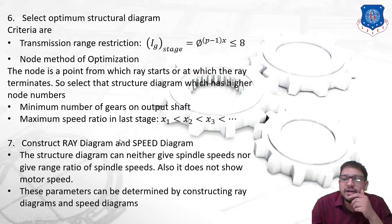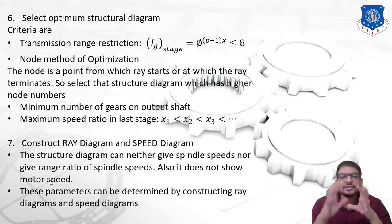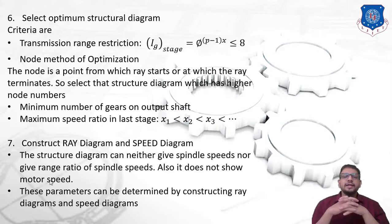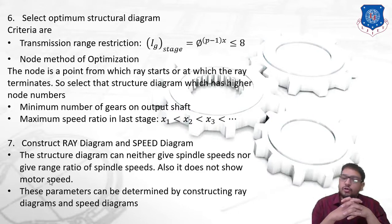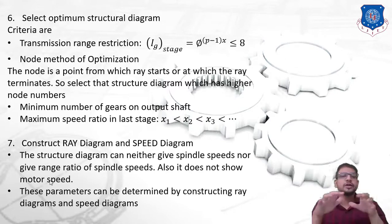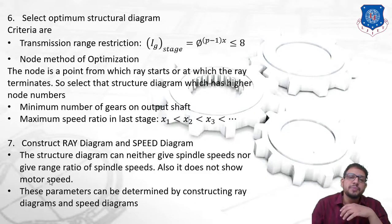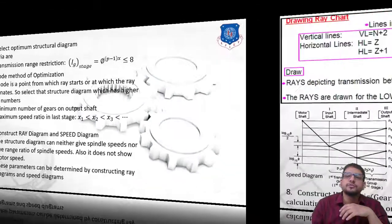We need to construct a ray diagram and speed diagram because a structural diagram can neither give spindle speeds nor range ratio of spindle speeds, and it does not show the motor speed. These are the disadvantages of a structural diagram. To determine these parameters, we need to construct a ray diagram and a speed diagram.